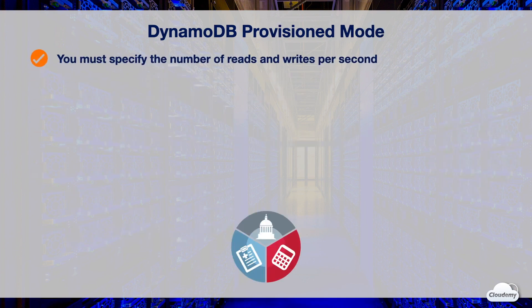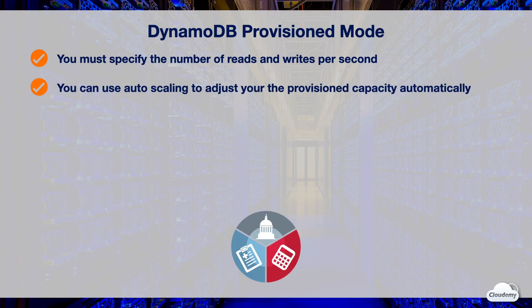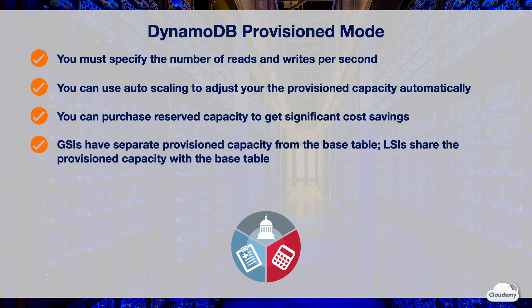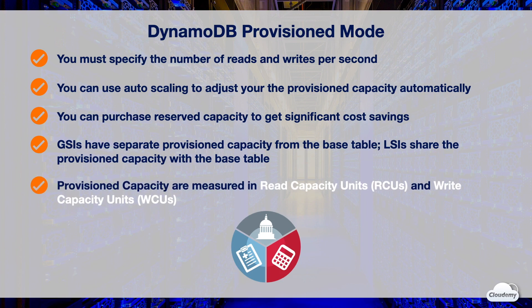If you choose provisioned mode, you must specify the number of reads and writes per second required for your application. Provisioned mode is a good option for applications with predictable workloads. You can use auto scaling to adjust the capacity automatically in response to traffic changes, and you can also purchase reserved capacity for significant cost savings. When you add a Global Secondary Index (GSI), you must specify its read and write capacity settings — the provisioned capacities of GSIs are independent of the base table. However, LSIs share the provisioned capacity with the base table.